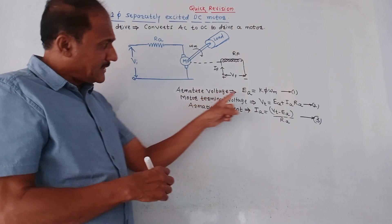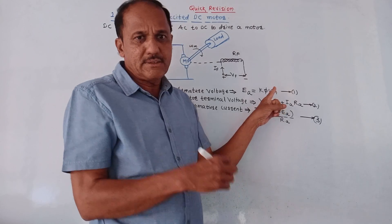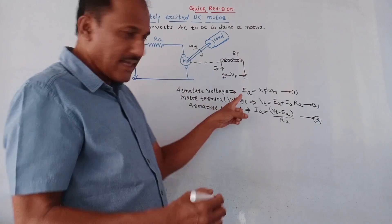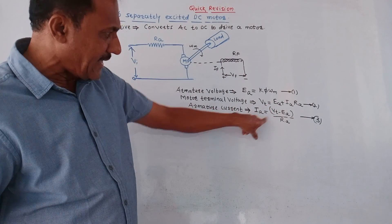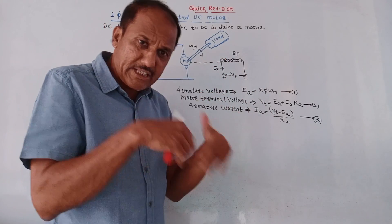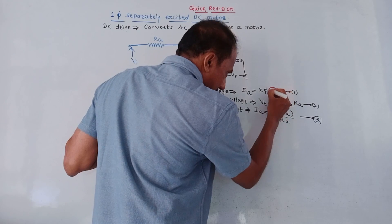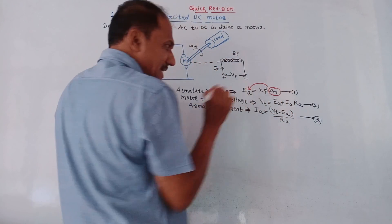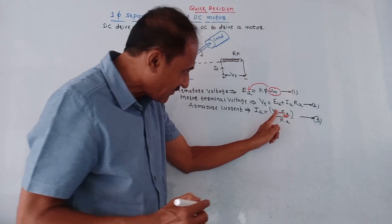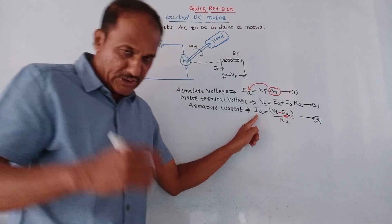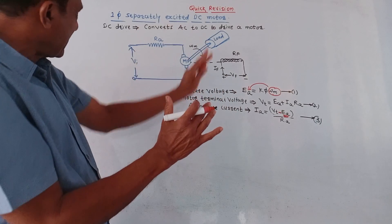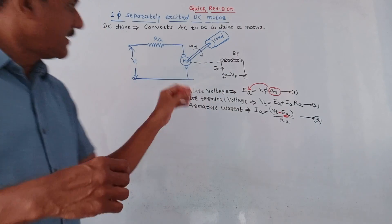The different equations are: armature voltage EA = Kφ·ωM, where ωM is the rotational speed of the motor. Motor terminal voltage VT = EA + IA·RA, where RA is armature resistance and IA is current through armature windings. Armature current IA = (VT − EA) / RA. Whenever there is an increase in load, the motor speed ωM reduces, so EA reduces. From equation 3, reduced EA means armature current IA increases, which develops more torque and the speed is recovered. This is how the single phase separately excited DC motor works.